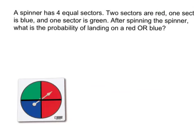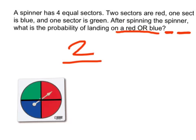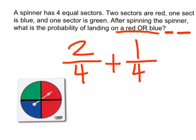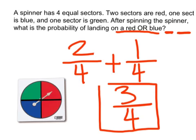Example 3. We have a spinner that has four equal sectors — two sectors are red, one is blue, and one is green. We want to know the probability of landing on a red or a blue. Since we have this 'or,' we're going to be adding two different probabilities: the probability of landing on red plus the probability of landing on blue. There are two ways to land on red out of four total sectors, plus one out of four for blue. When we add that, we get three-fourths. Can we reduce three-fourths? No, so that is our final answer.